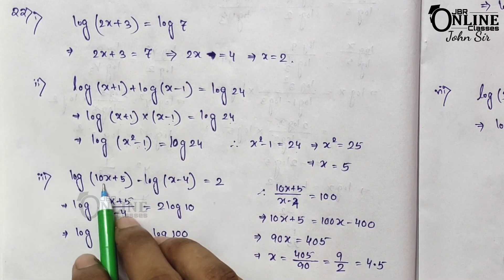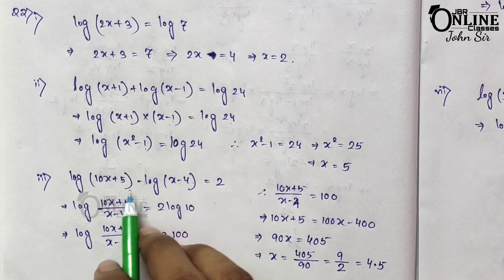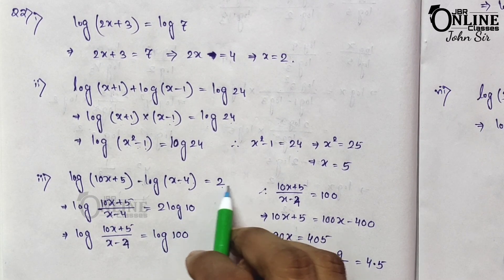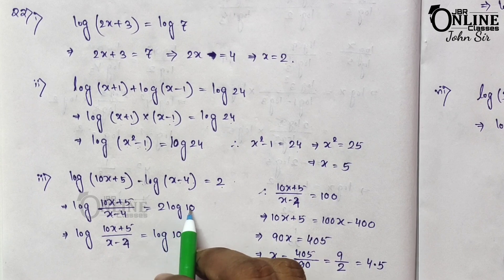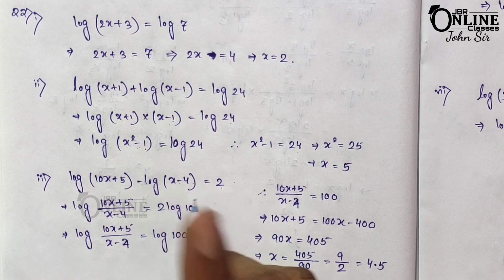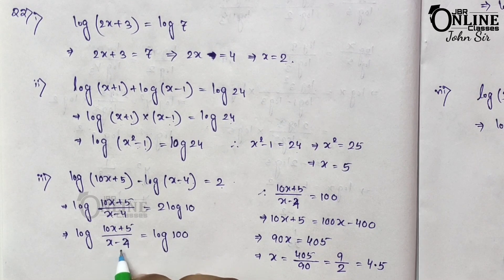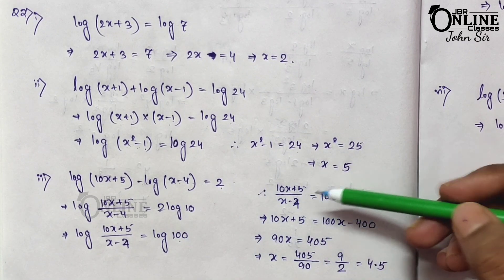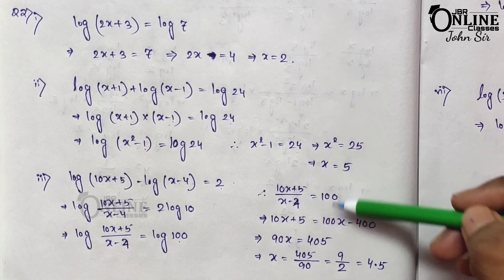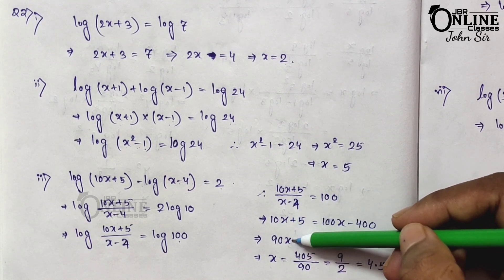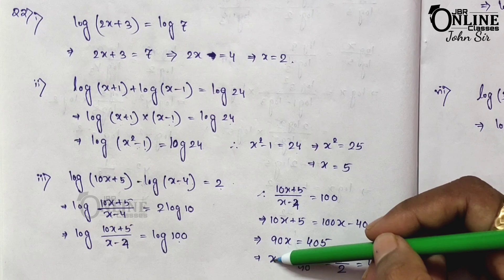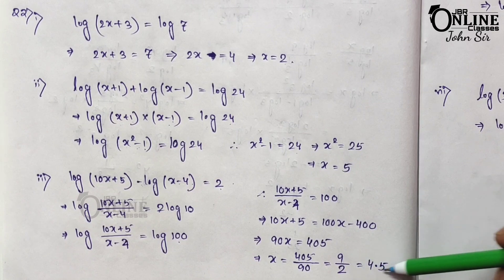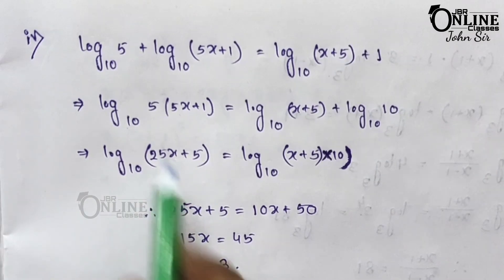Third equation: log(10x + 5) − log(x − 4) = log 2 + 2. The 2 can be written as 2 log 10 = log 100, giving log[(10x+5)/(x−4)] = log 100. Comparing both sides: (10x+5)/(x−4) = 100. Cross-multiplying: 10x + 5 = 100x − 400, giving 90x = 405, so x = 405/90 = 9/2 = 4.5.